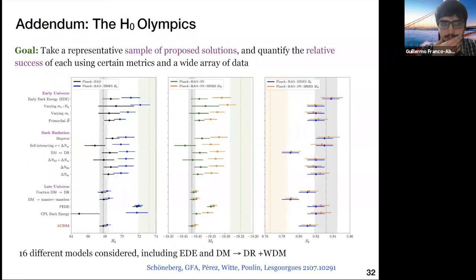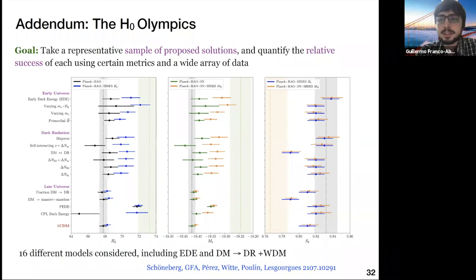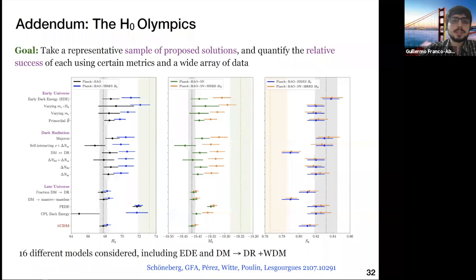Before concluding, I want to mention that I participated in a project called the Hubble Olympics, where we wanted to understand which mechanisms are most successful at resolving the Hubble tension. We tested a sample of 16 different models — including early dark energy and the dark matter decay model — against a wide combination of data using specific comparison criteria. I don't have time to go into details, but this project was led by Nils, who is now a postdoc in Barcelona, and he can tell you more about it.